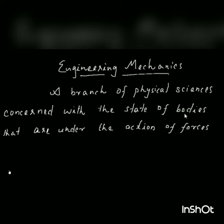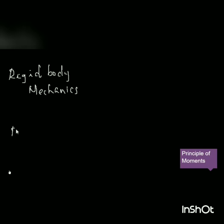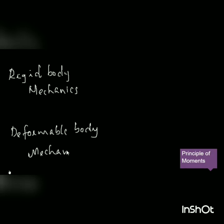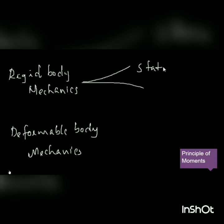Going back to the definition: Engineering Mechanics is the study of the state of a body. What type of bodies do we study? Mechanics is broadly classified into rigid body mechanics and deformable body mechanics. Rigid body mechanics is further classified into statics and dynamics.